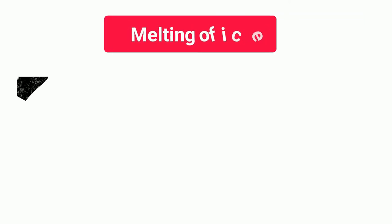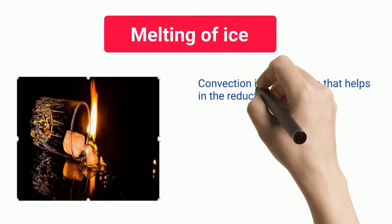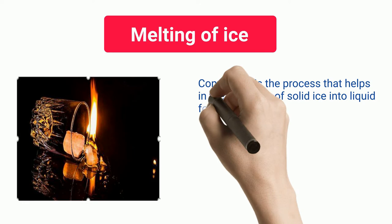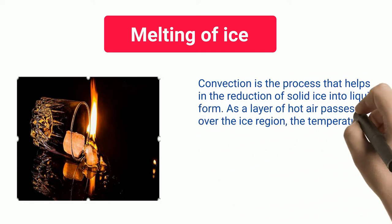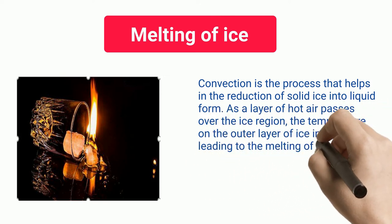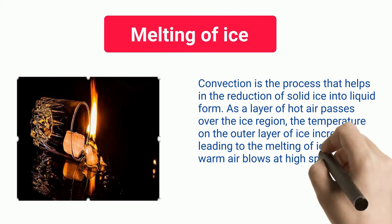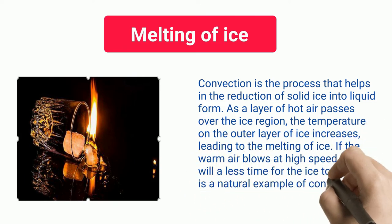Melting of Ice: Convection is the process that helps in the reduction of solid ice into liquid form. As a layer of hot air passes over the ice region, the temperature on the outer layer of ice increases, leading to the melting of ice. If the warm air blows at high speed, there will be less time for the ice to melt. It is a natural example of convection heat transfer.